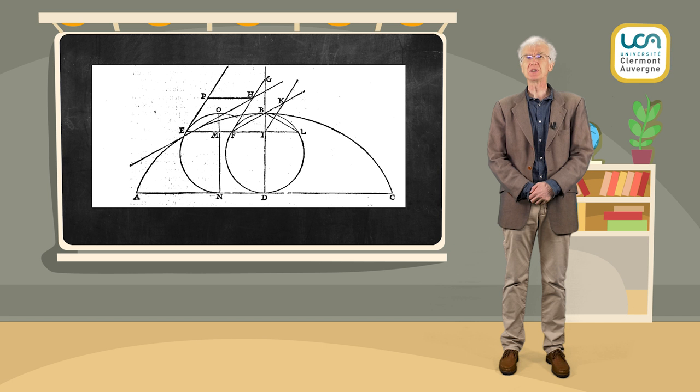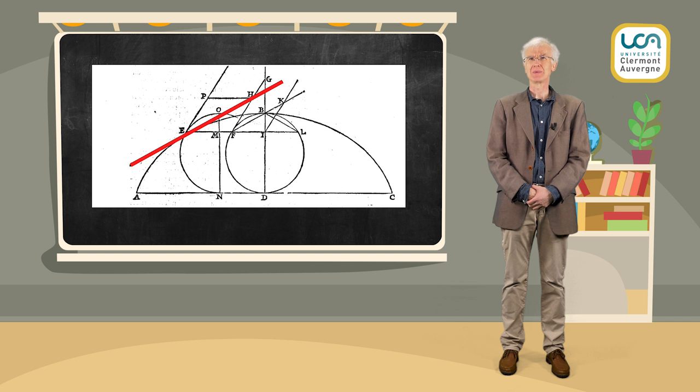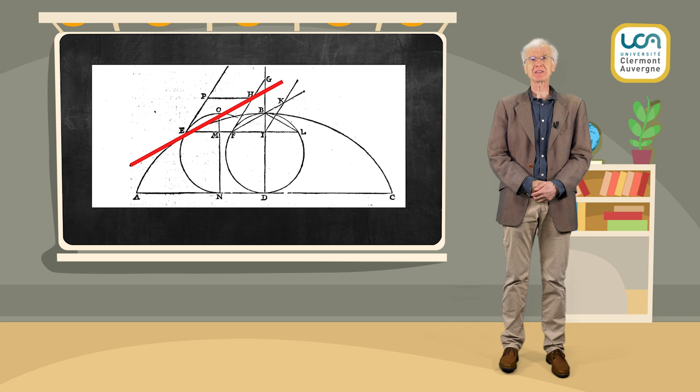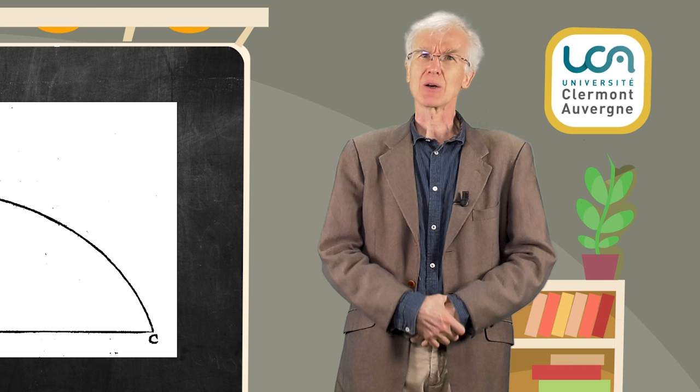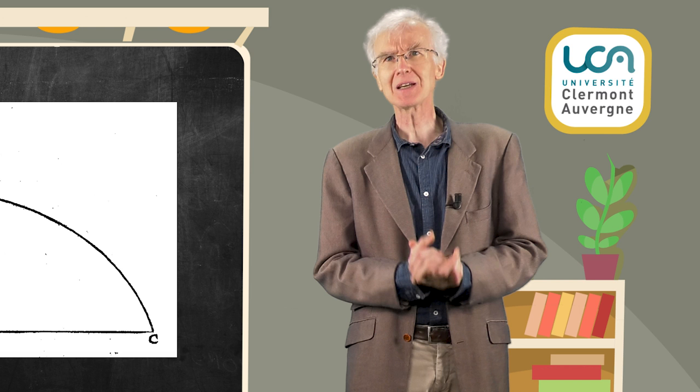Le problème de la construction de la tangente à une courbe en un point est de décider s'il existe une droite qui approche le mieux cette courbe en ce point. Une courbe peut très bien ne pas avoir de tangente. Les Grecs ne connaissaient avec exactitude que peu de tangentes: la tangente au cercle, depuis Euclide, la tangente à la spirale, avec Archimède, et la tangente aux coniques, avec Apollonius.